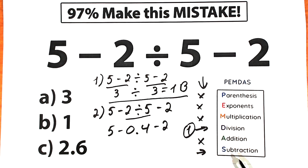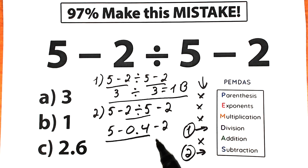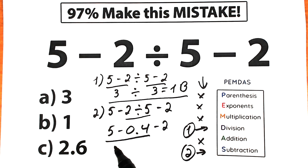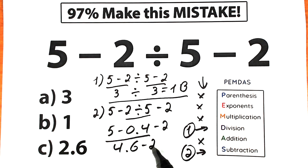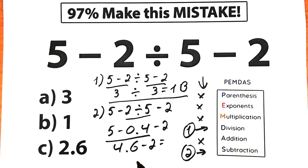Our second step is subtraction. We subtract in strict order from left to right: 5 minus 0.4 equals 4.6. Then 4.6 minus 2.